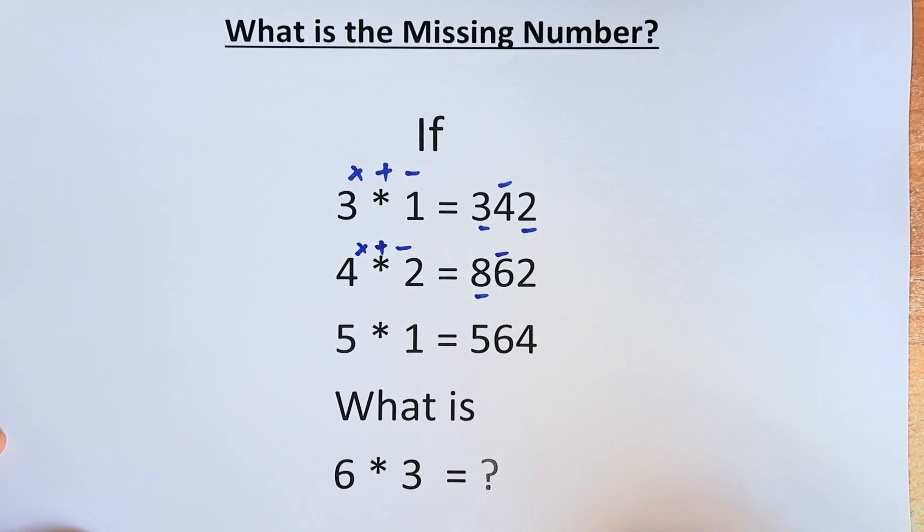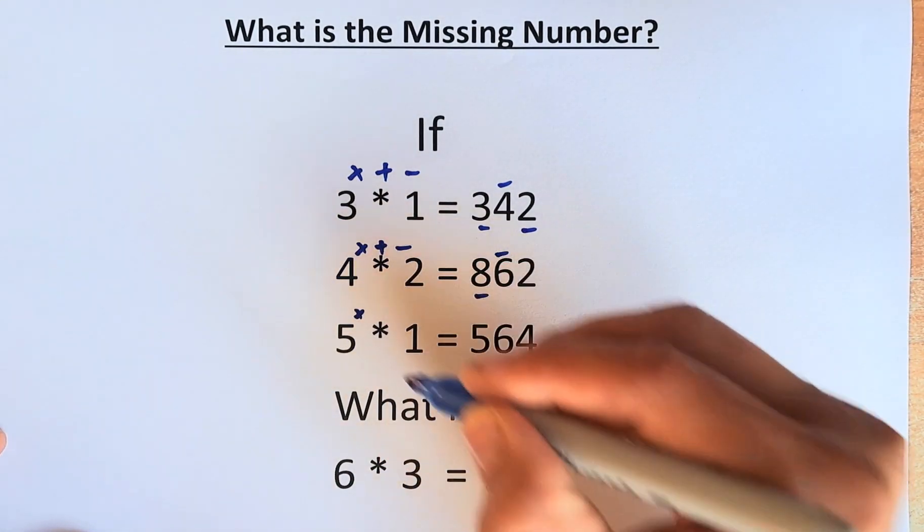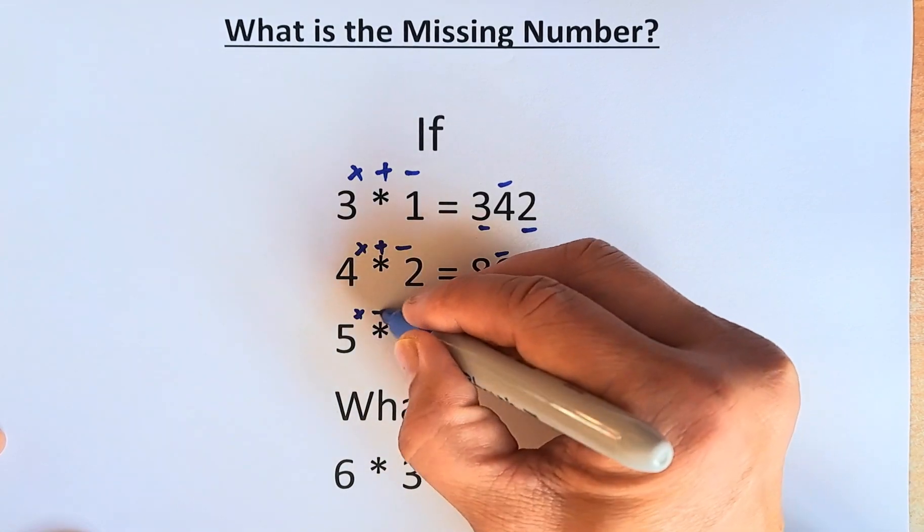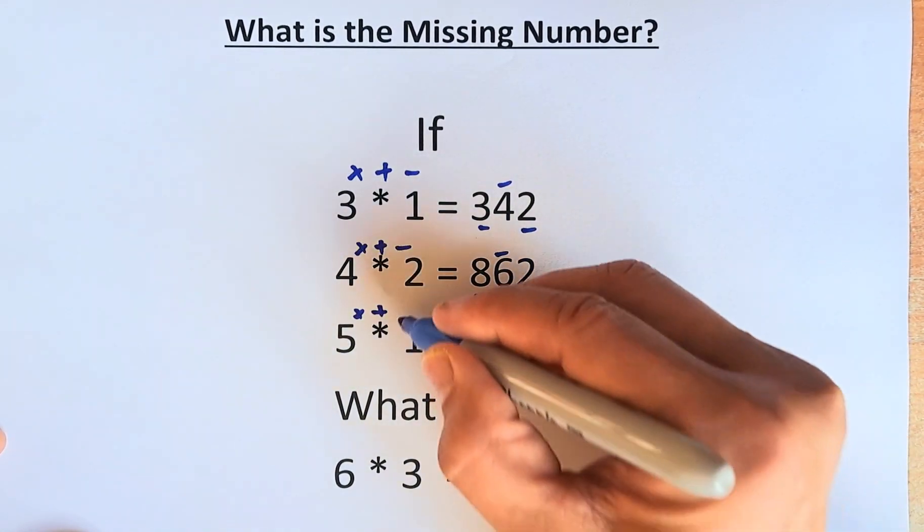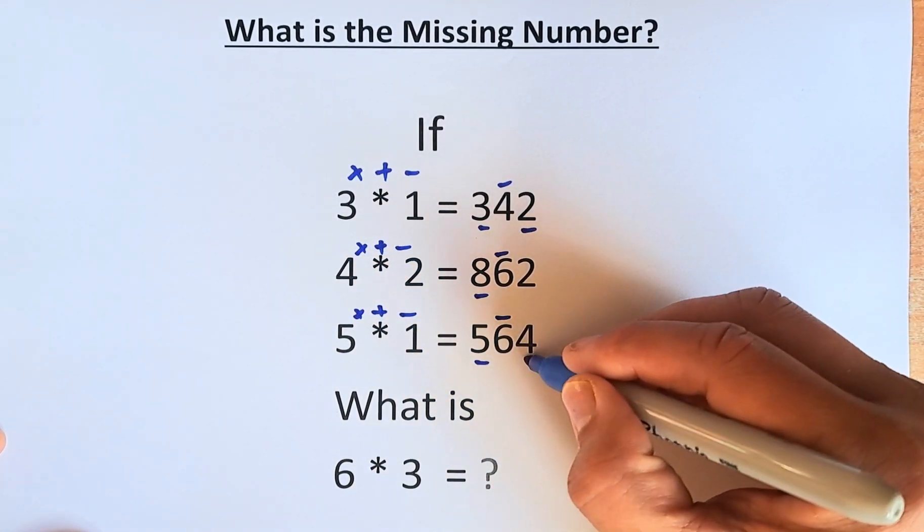And this proceeds to the third row: 5 times 1 is 5, 5 plus 1 is 6, and 5 minus 1 is 4.